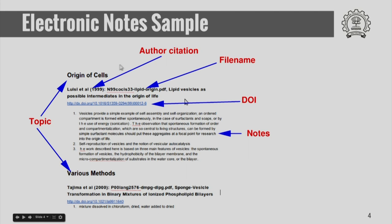Let me show you a simple example. Here, I have a topic and here is another topic. Under each topic, I have listed the author name, the name of the file, and the DOI number — the Document Object Identifier number. Since this is an electronic file, this is a link and I can click on this link to directly take me to the file on the web. Below each article, I use the notes which I have copied and pasted from the PDF file. When you come back to this and read them, it will be a good summary of the important lines that you have highlighted, which is otherwise difficult to read from a long paper.